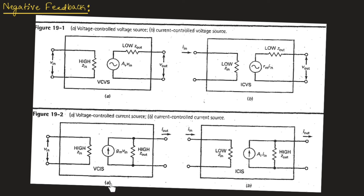Figure 19.2.a represents the voltage controlled current source. Here, the input is voltage and the output is current, which is why it is known as a trans-conductance amplifier. Input impedance is high and output impedance is also high. Ideally, we say both are infinity, but practically input and output impedance are very high.